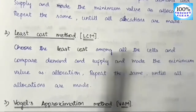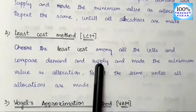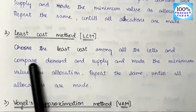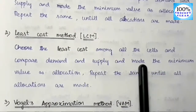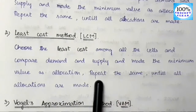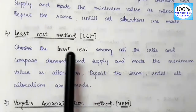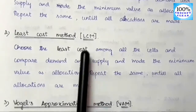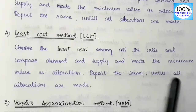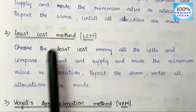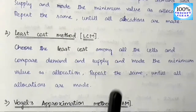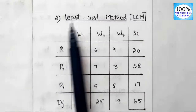Compare demand and supply and allocate the minimum value. Then repeat the same process until all allocations are made. Let's apply this method. There are three plants for supply and three warehouses for demand, with a total demand and supply of 65. The nine elements in the matrix are the costs.